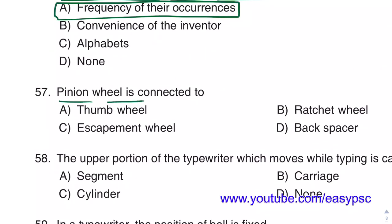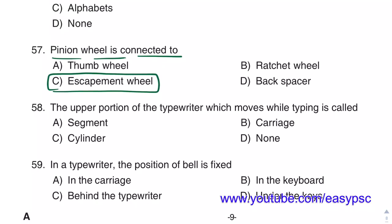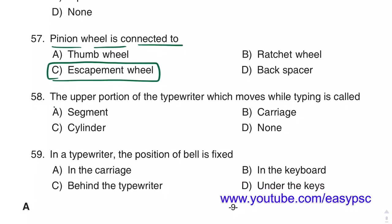The P-N Wheel is connected to the Escapement wheel. The upper portion of the typewriter which moves while typing is called the Carriage.